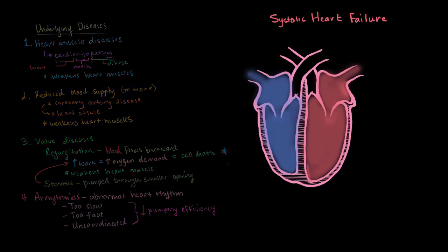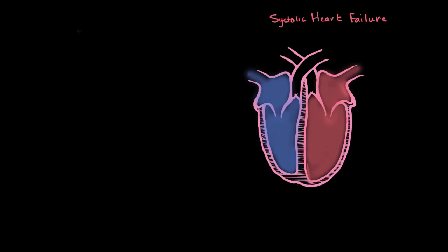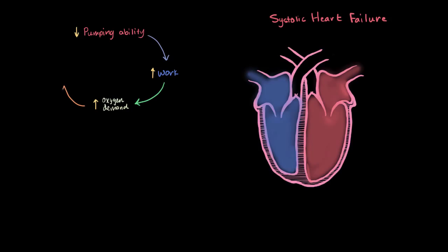We start to see a pattern: each category reduces pumping ability, making it harder for the heart to maintain the same blood supply. The cells that work harder demand more oxygen, but that oxygen can't be supplied, so those muscle cells die off. And when they die off, the heart gets weaker and pumping ability is lowered even more.